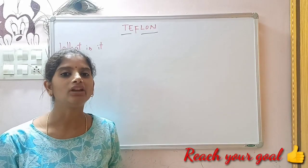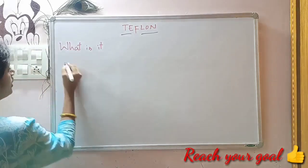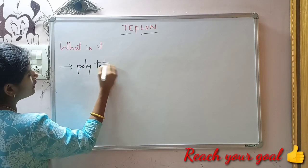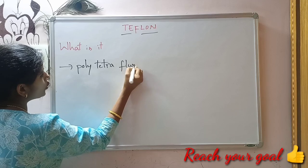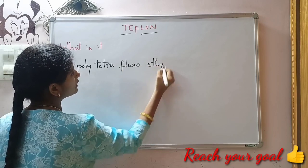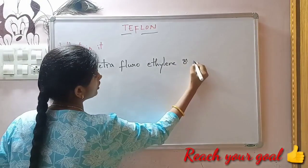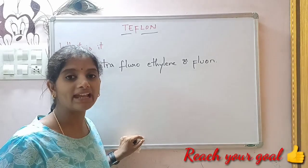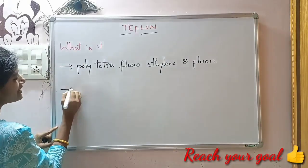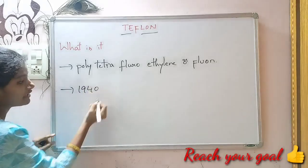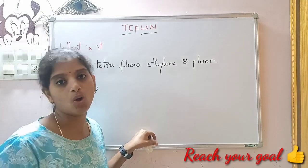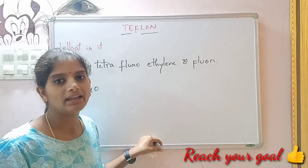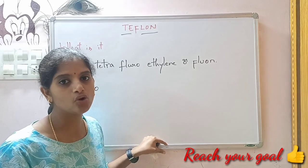First of all, what is Teflon? Teflon is also called polytetrafluoroethylene, or PTFE. Due to the presence of highly electronegative fluorine atoms, it was synthesized in 1940. Therefore, it is not a naturally occurring compound. It is a synthesized polymer which has many general uses, and it is most commonly used as a non-stick coating for cookware.